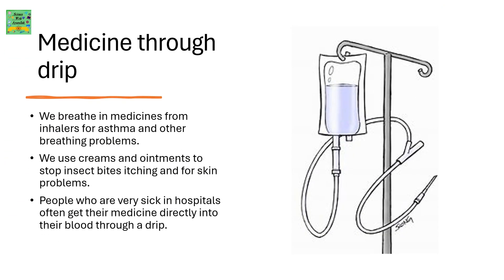Medicine through drip: We breathe in medicines from inhalers for asthma and other breathing problems. We use creams and ointments to stop insect bites, itching, and for skin problems. People who are very sick in hospitals often get their medicines directly into their blood through a drip.